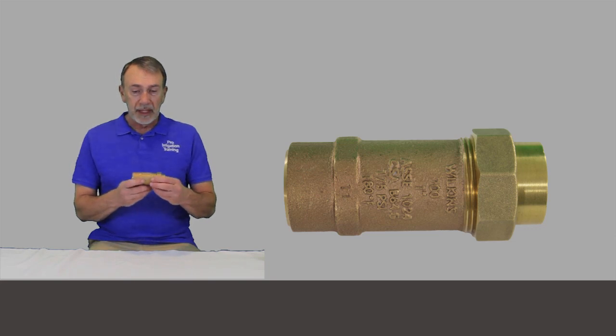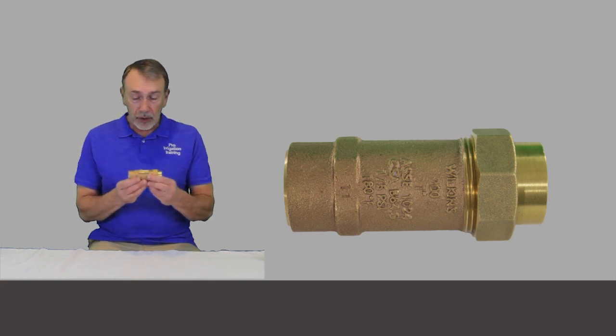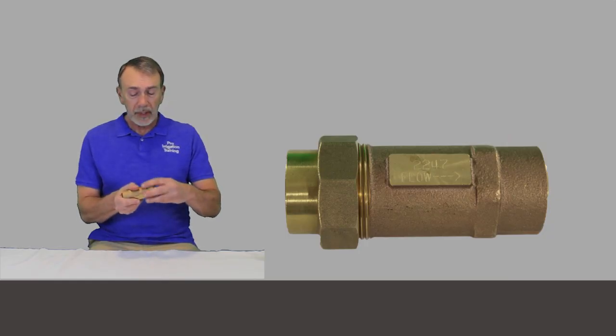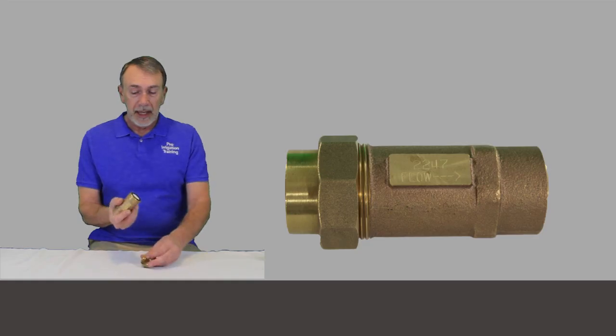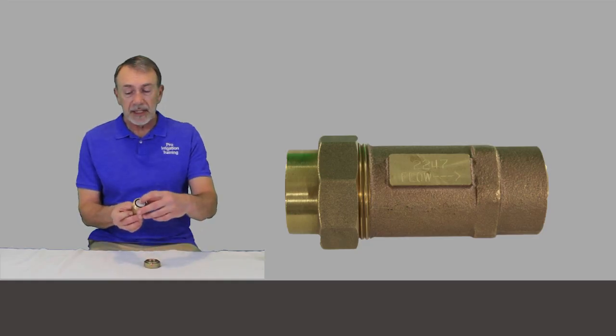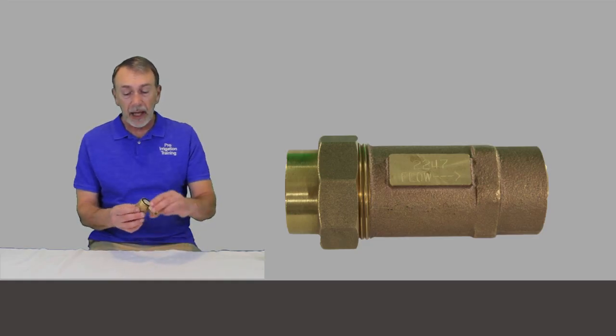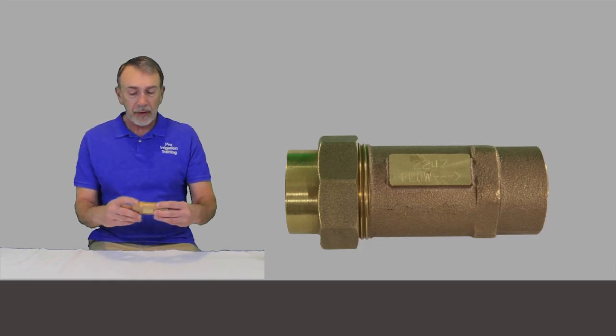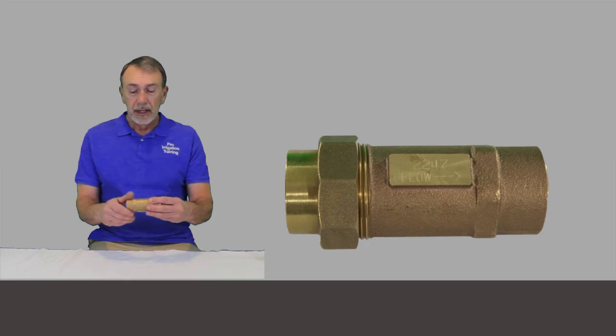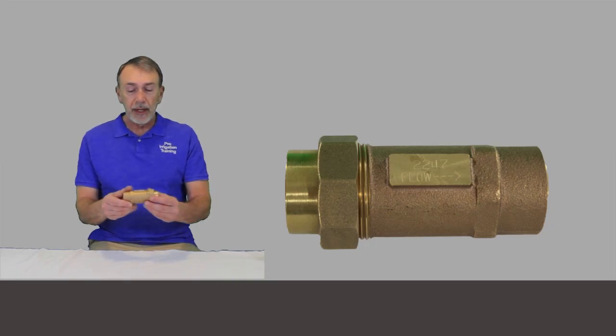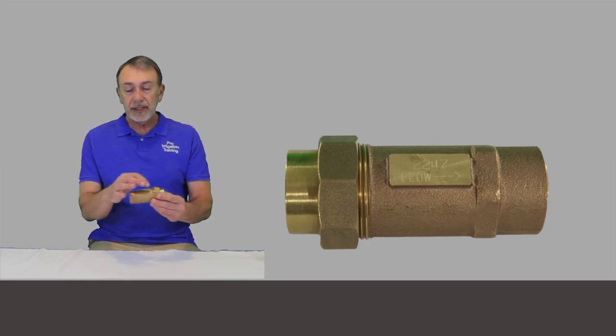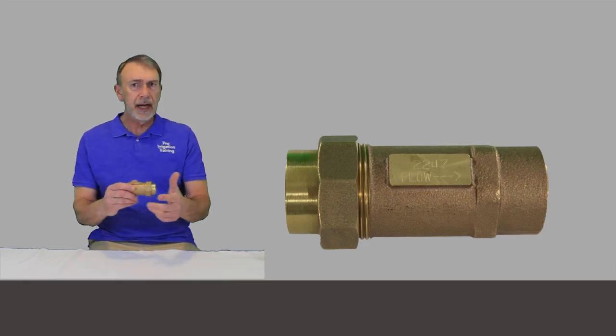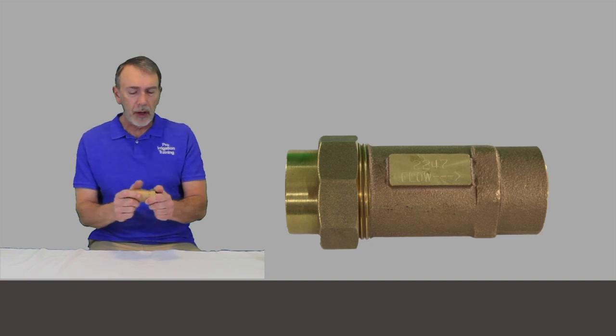We have this here, a Zurn-Wilkins version that you can take apart, and it has the check valves inside of it, and we'll take that apart fully in just a minute and talk about that. But there's another kind that Watts makes that has the union on it, but this side here, it has the two check valves inside of it, but they're not replaceable, or at least that I can tell, but I'm pretty sure that they're not.